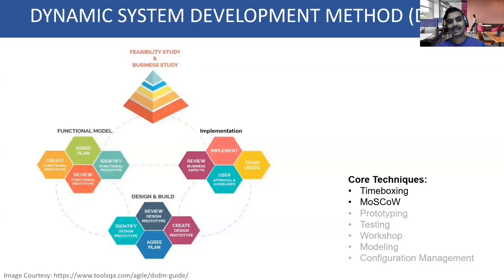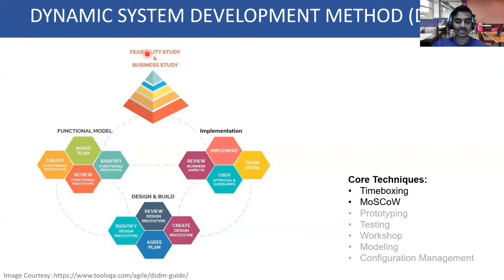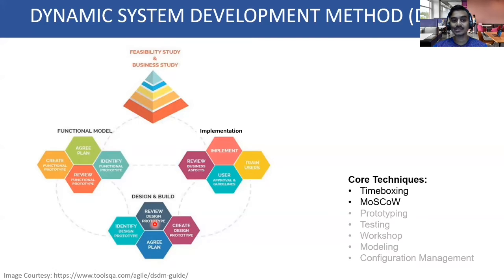Starting with DSDM — early 1990s, migrating from green screens to graphical UI. The remarkable standout was something called prototyping. The method works like this: the team comes together to do a feasibility study — do we have people, is this the right project, do we have money? Followed by a business study assessing the business. If those two are done, you move on to creating a functional prototype, which goes through an internal circle of identification, agreeing, and creation. Once done, it goes to the actual review build-out, a much closer design prototype of what you're really going to build, then implementation — pretty much like a typical product lifecycle.